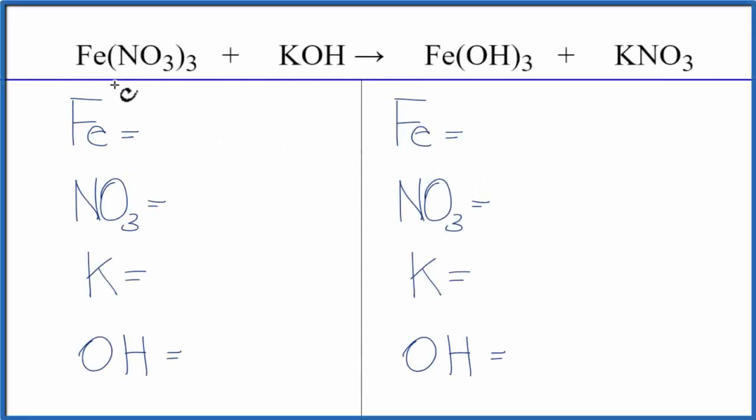In this video we'll balance the equation iron(III) nitrate plus potassium hydroxide gives us iron(III) hydroxide plus potassium nitrate. This is a double displacement reaction, so let's add up the atoms on each side of the equation.